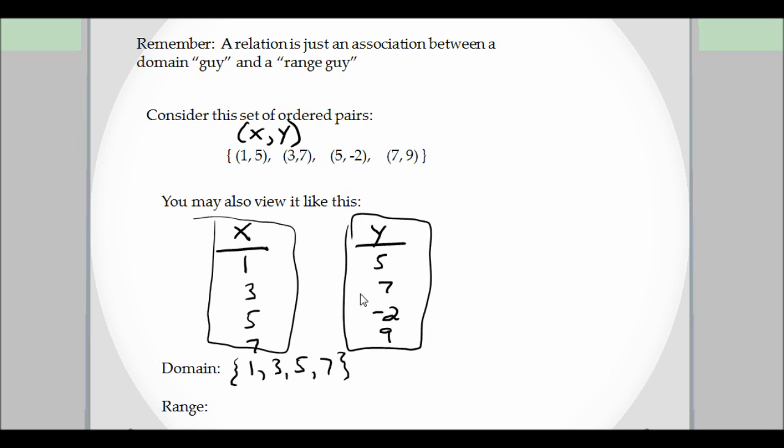Is it a function? Does every input have one output? Yeah, right? You have nothing crossing over. Every single input has one output. So my domain is 1, 3, 5, 7, all the x parts of the coordinate. And the range would then be all the outputs: 5, 7, negative 2, 9.